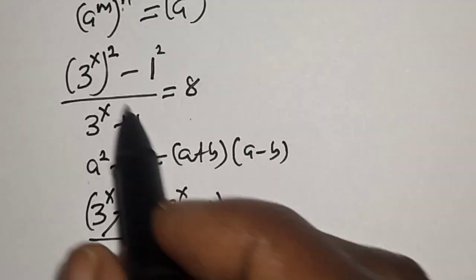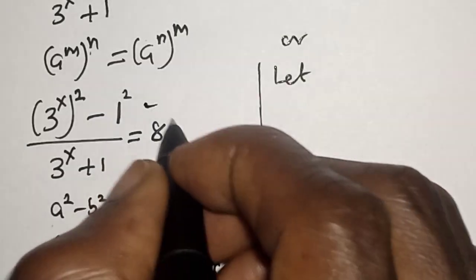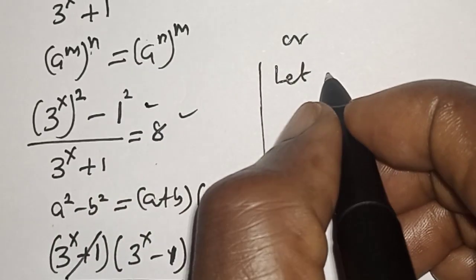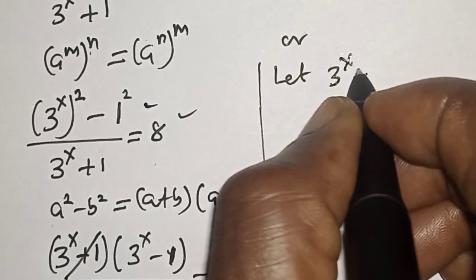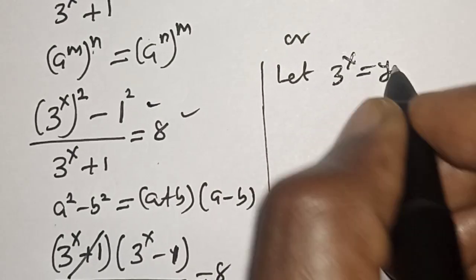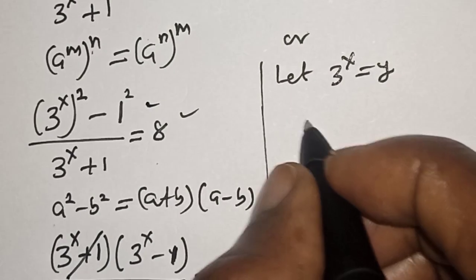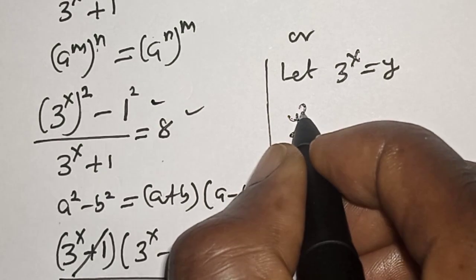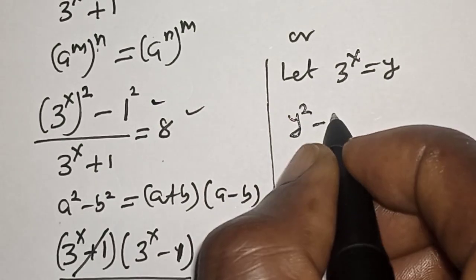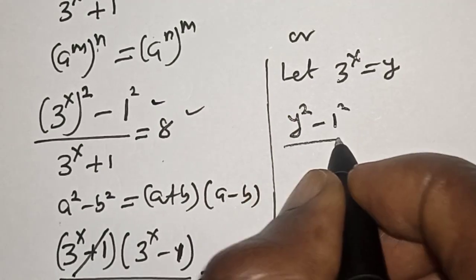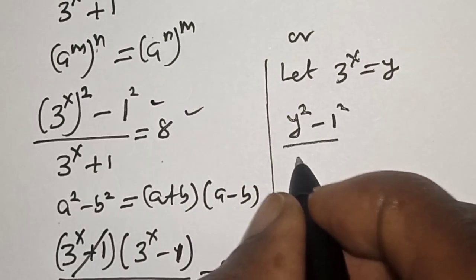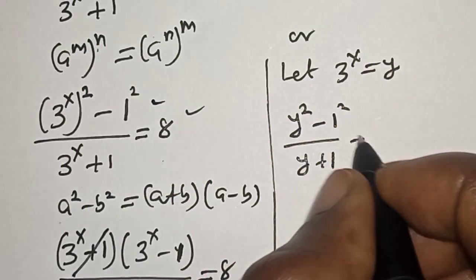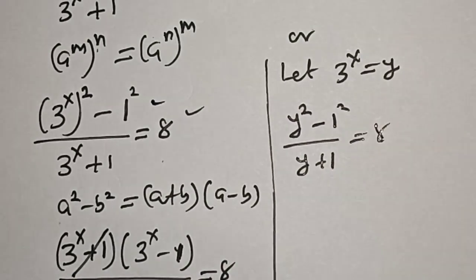From here, we can use other methods. Let's let 3 raised to power x equal to y. Now, if that is the case, we have y squared minus 1 squared over y plus 1 is equal to 8.